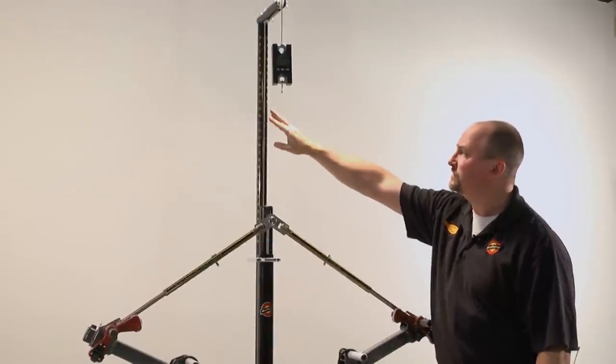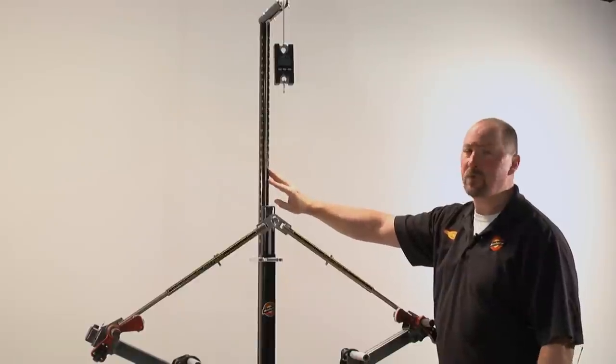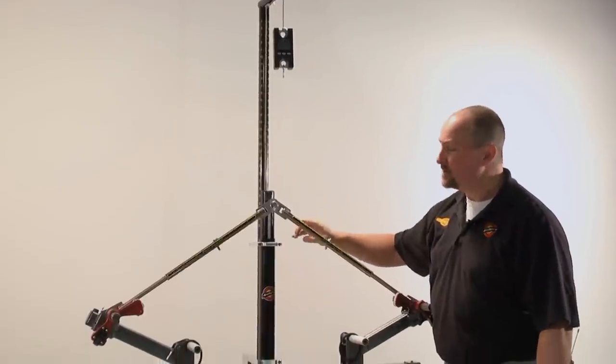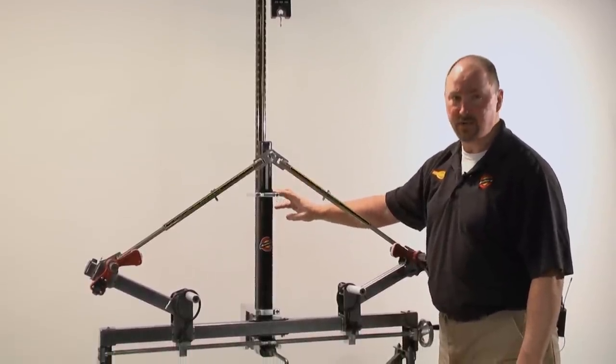On the vertical tube there's also a scale for measuring draw length, plotting draw force curves, things like that. We'll review that later in the video. Important to note is that the ProDraw will mount to any bow press that has a two and a quarter inch diameter jack stand.